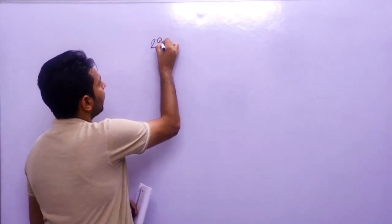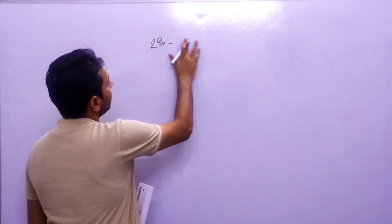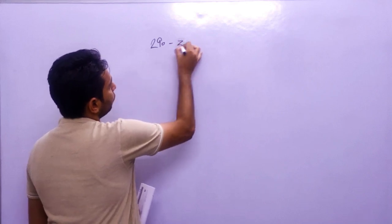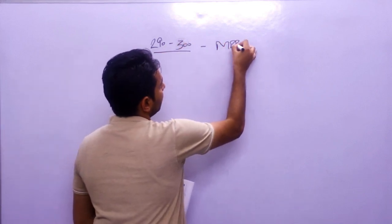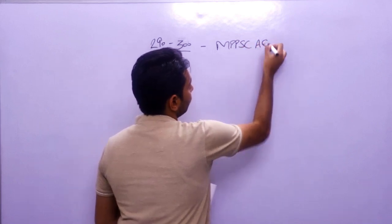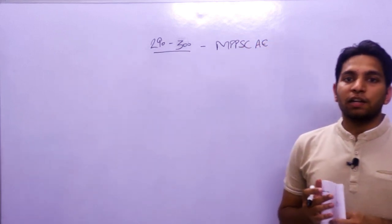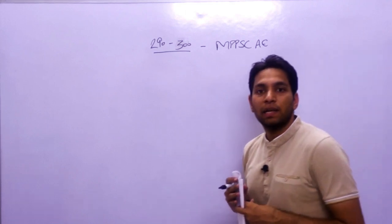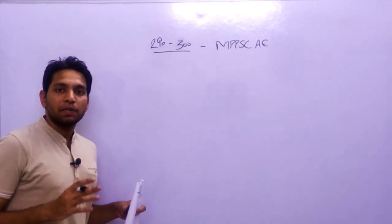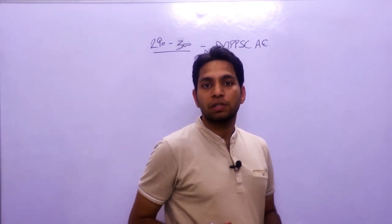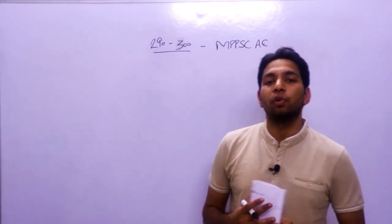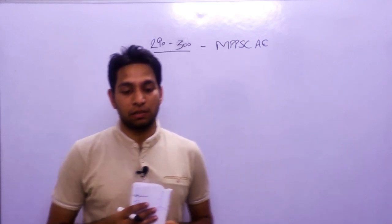If you are scoring 230 to 290 marks out of 300, that is a good score in the MPPSC AE exam. So don't get disheartened if you are scoring less than this. The purpose is that by challenging some questions, you may get selected for the interview.